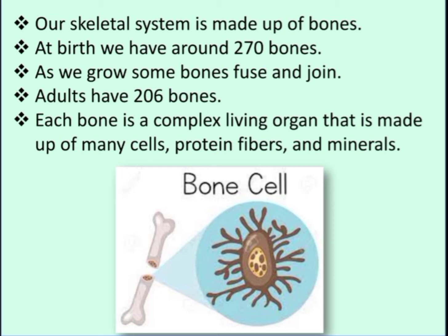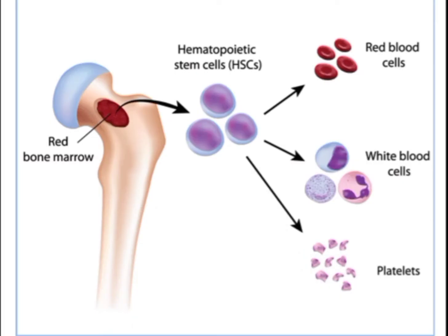The bone is also made up of many cells. In this picture, the bone has red bone marrow, which is basically a tissue. This tissue contains stem cells, and these stem cells consist of red blood cells, white blood cells, and platelets. You will understand more about this in your further classes.